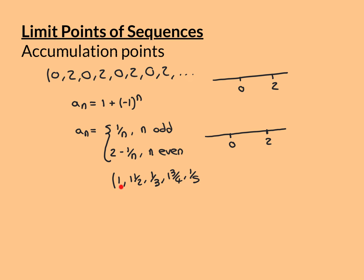The odd terms of this sequence get closer and closer to zero, converging to zero, whilst the even terms get closer and closer to two. So again, this is not overall a convergent sequence because it's not getting and staying indefinitely close to one point, but it is getting indefinitely close to two separate points — those will be the two limit points of this sequence.